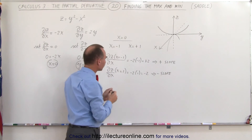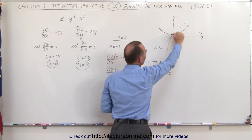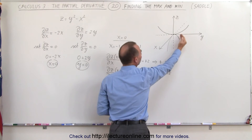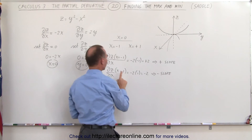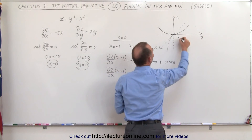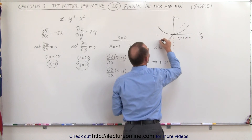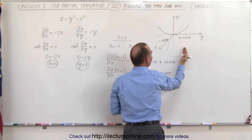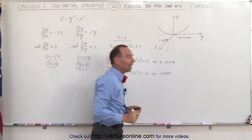Let's see if that makes sense. When x is a negative number — on this side of the point — we have a positive slope going up. When x equals positive 1 — on this side — we have a negative slope. So we can see a positive slope here and a negative slope there, which means the function is increasing then decreasing: that is the form of the saddle.